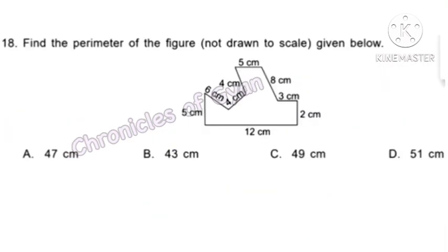Question 18. Find the perimeter of the figure not drawn to scale. Adding all sides: 5 plus 6 is 11, plus 4 is 15, plus 4 is 19, plus 5 is 24, plus 8 is 32, plus 3 is 35, plus 2 is 37, plus 12 is 49 centimeters. Option C.